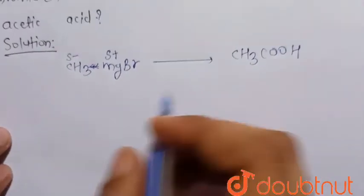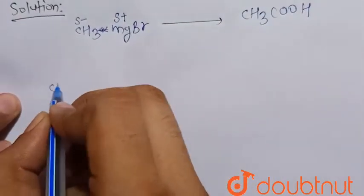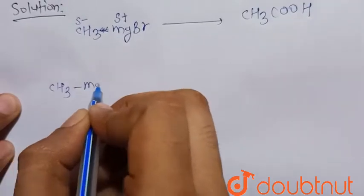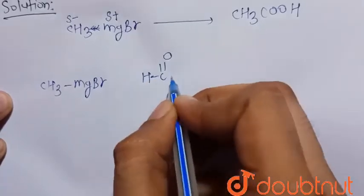First, we have to prepare acetic acid from methyl magnesium bromide. Methyl magnesium bromide will react with formaldehyde, HCHO or HC=OH.